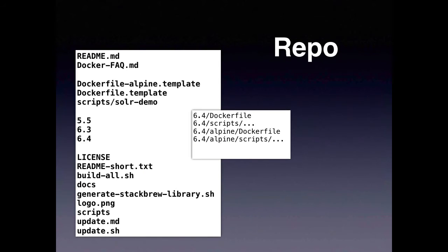So what's under the hood? If you look at our GitHub repository, you'll see we have two template files — one Dockerfile and one for Alpine, which is available for the OpenJDK and makes it quicker to download. So we provide our images for both the normal and Alpine variants. There is a scripts directory that contains things like the 'solr-demo' command that we executed earlier.